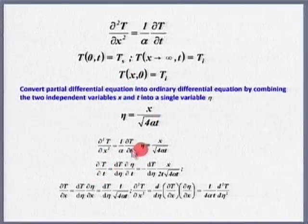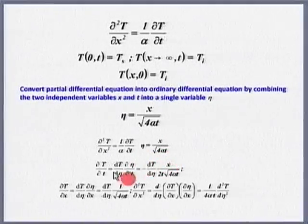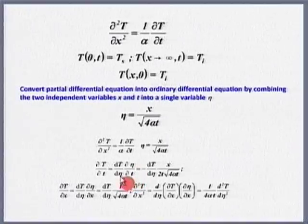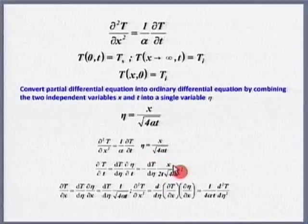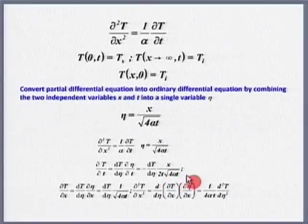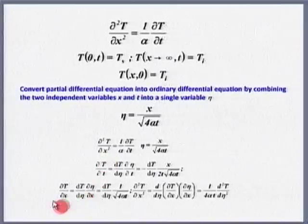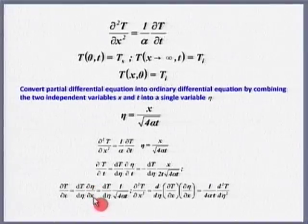So ∂²T/∂x² = (1/α)(∂T/∂t), and η = x/√(4αt). For ∂T/∂t I can write this as (dT/dη)(∂η/∂t). Differentiating η with respect to t, with x remaining as is, gives −(dT/dη) · x / (2t√(4αt)). Similarly, I need ∂²T/∂x², and ∂T/∂x = (dT/dη)(∂η/∂x).